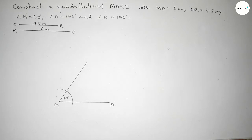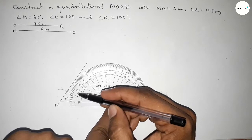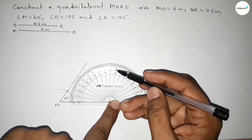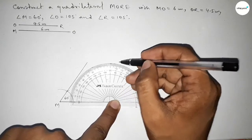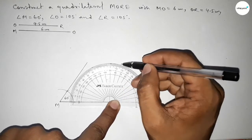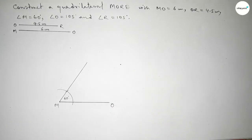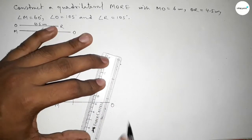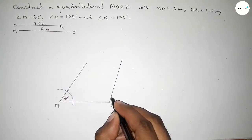Next, drawing a 105 degree angle on point O. Putting the protractor on point O and counting 105 degrees. Marking 105 degrees and joining this line to get a 105 degree angle.